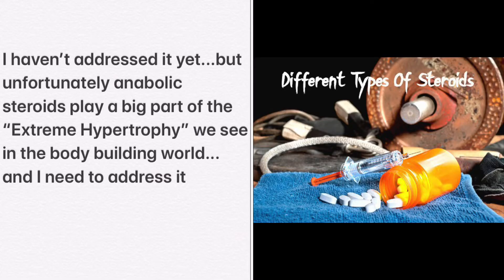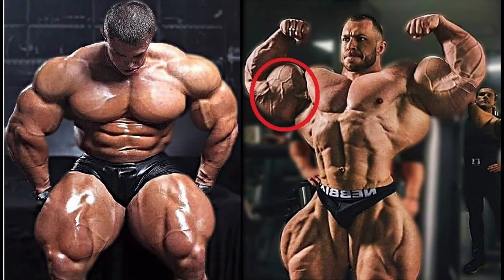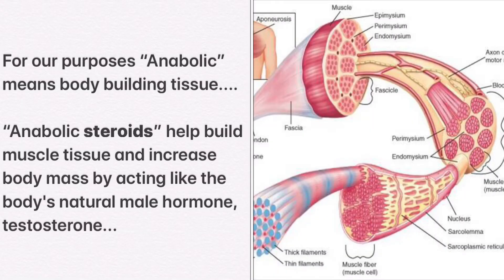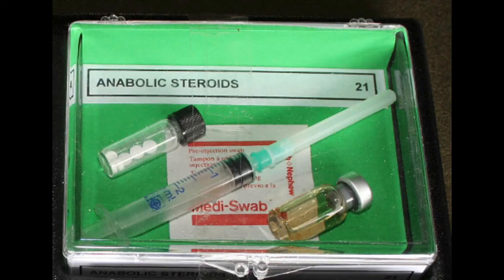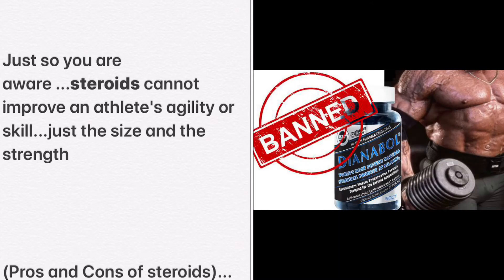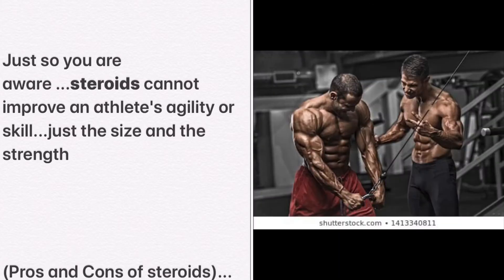I haven't addressed it yet, but unfortunately anabolic steroids play a big part of the extreme hypertrophy we see in the bodybuilding world, and I need to address it. For our purposes, anabolic means bodybuilding tissue. Anabolic steroids help build muscle tissue and increase body mass by acting like the body's natural male hormone, testosterone. Just so you are aware, steroids cannot improve an athlete's agility or skill — just the size and the strength of his muscles.